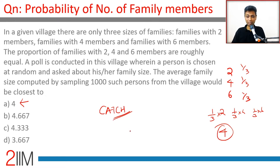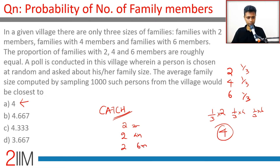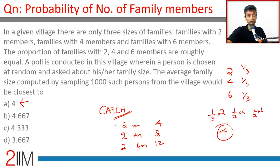If there are equal numbers of families — two-member, four-member, and six-member — and you're picking a person at random, is there an equal likelihood that the person comes from a two-member, four-member, or six-member family? Imagine two two-member families, two four-member families, and two six-member families. Pick a person at random: there are four people from two-member families, eight from four-member, and twelve from six-member. It's far more likely the randomly picked person comes from a six-member family than a two-member family.